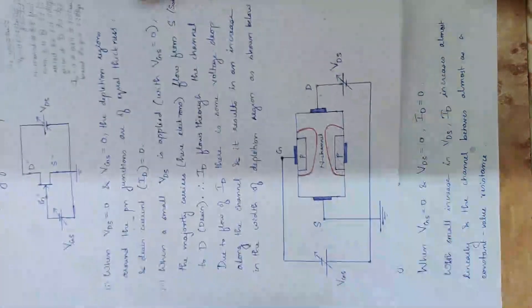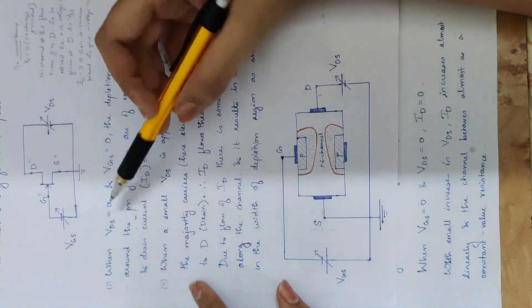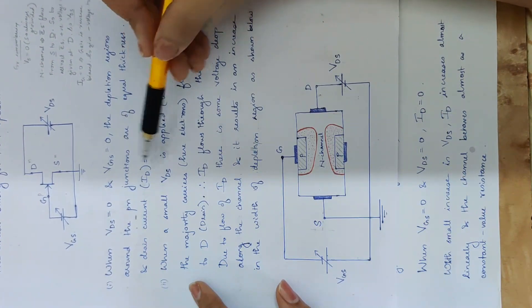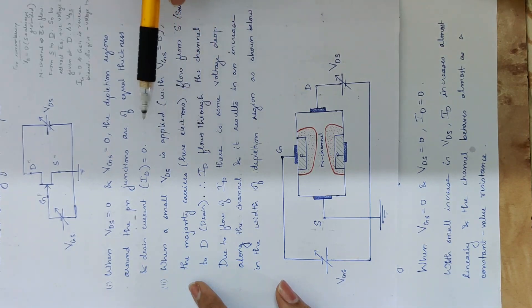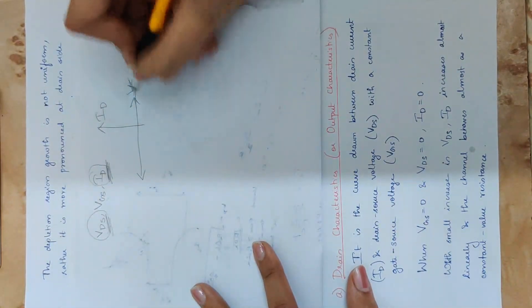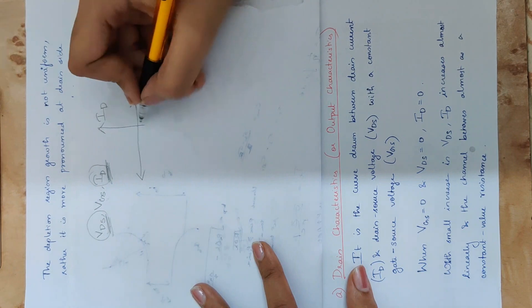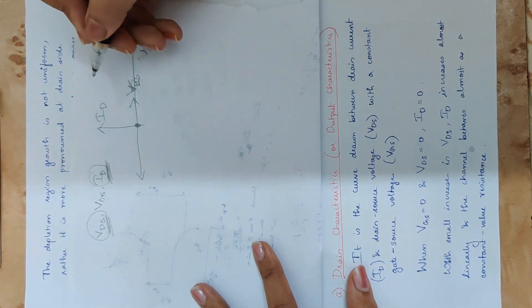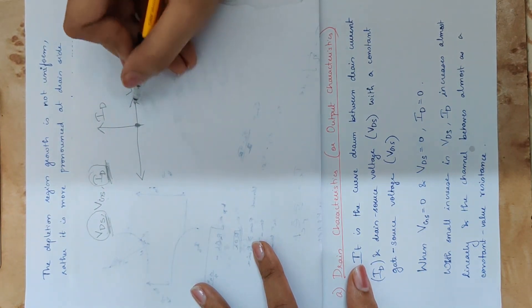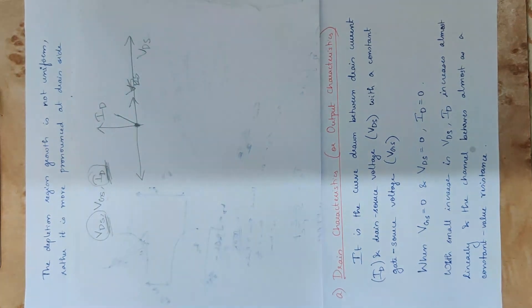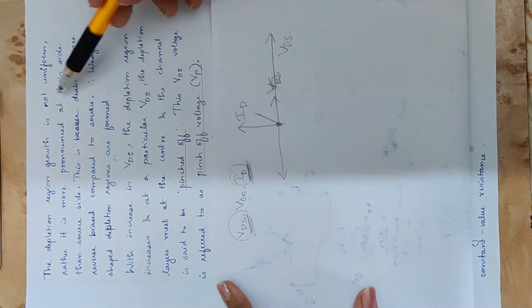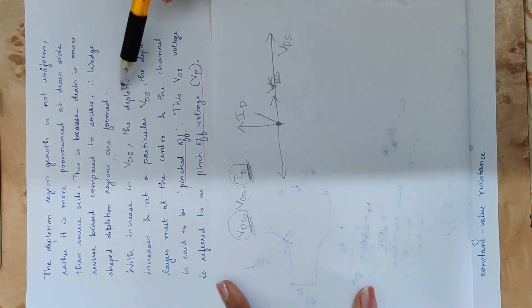Now we are going to explain this. When VGS is 0, drain current is 0. As VDS increases on the x-axis, the drain current increases.